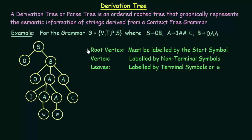Before we go into that, let us know the main things about a derivation tree. The first one is the root vertex — the root vertex must be labeled by the start symbol. The root vertex is the first vertex of the derivation tree, and it should be labeled by the start symbol. Here our start symbol is S, so the root vertex is labeled by S. The other vertices are labeled by the non-terminal symbols — the variables A and B.